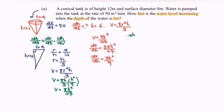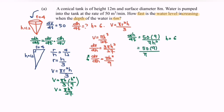Substituting into the chain rule: dh/dt = (dV/dt) × (dh/dV) = 50 × (9 / πh²). Remember to flip dV/dh to get dh/dV. With h = 6: dh/dt = 50 × (9 / (π × 36)).